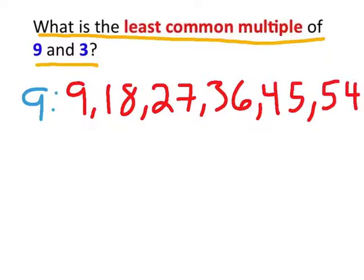And again, these are not all the multiples of 9, but we're only going to list a few in order to find our least common multiple. This could keep on going on and on. Although we stopped at 54, we could also continue with 63, and so on and so forth. But I'm just going to list a few.